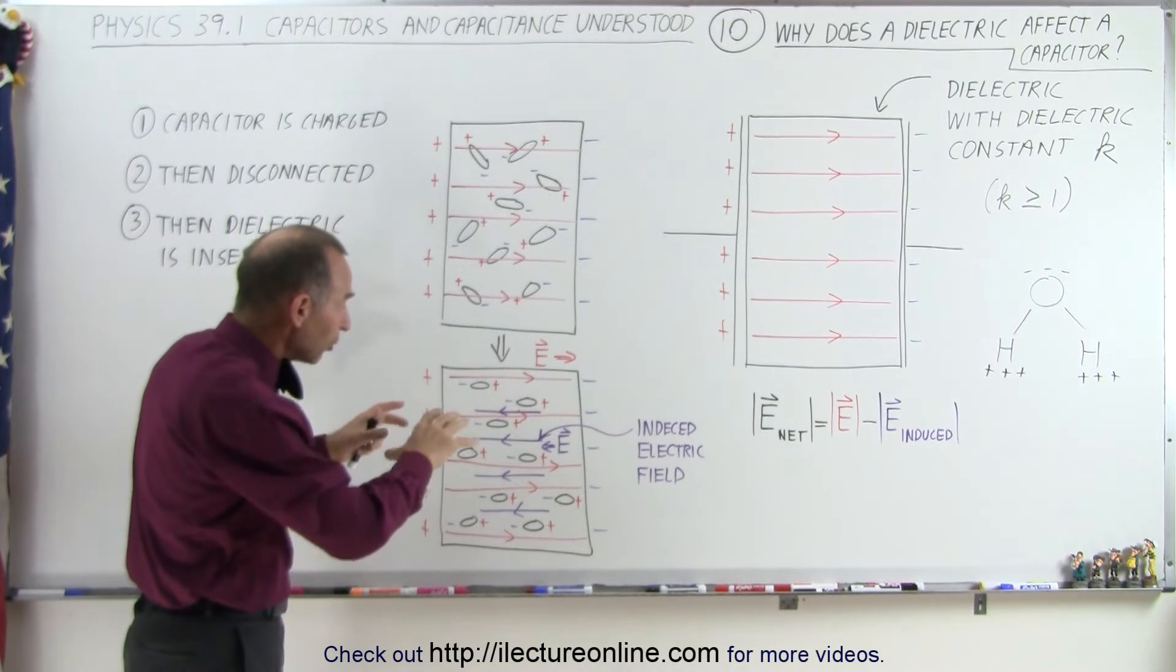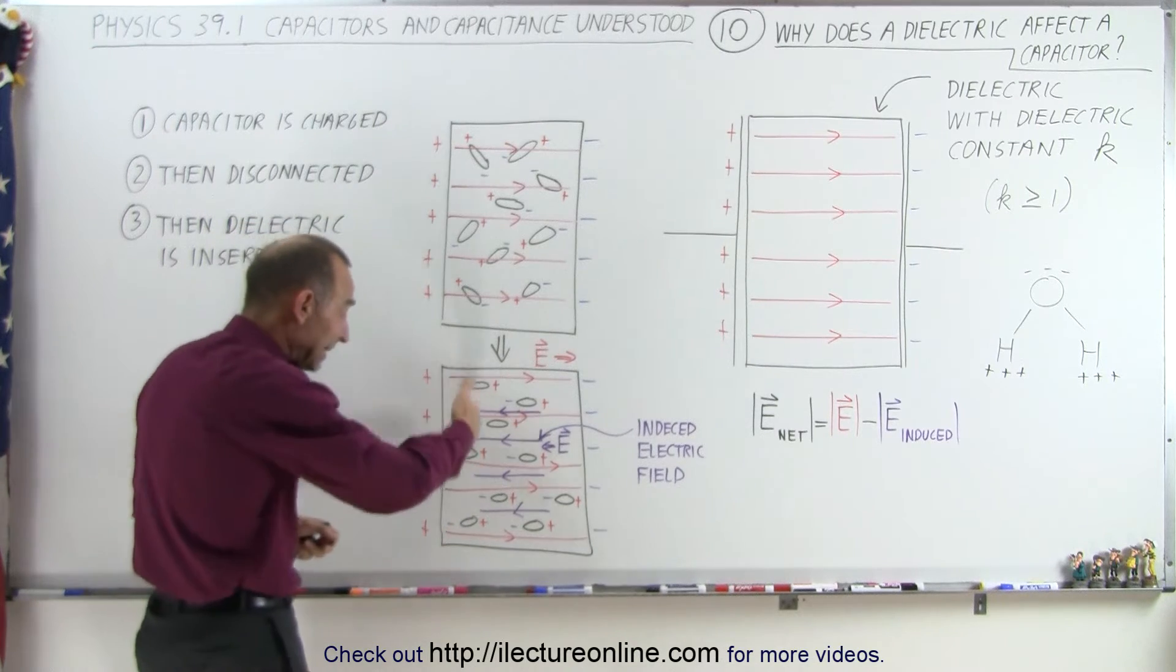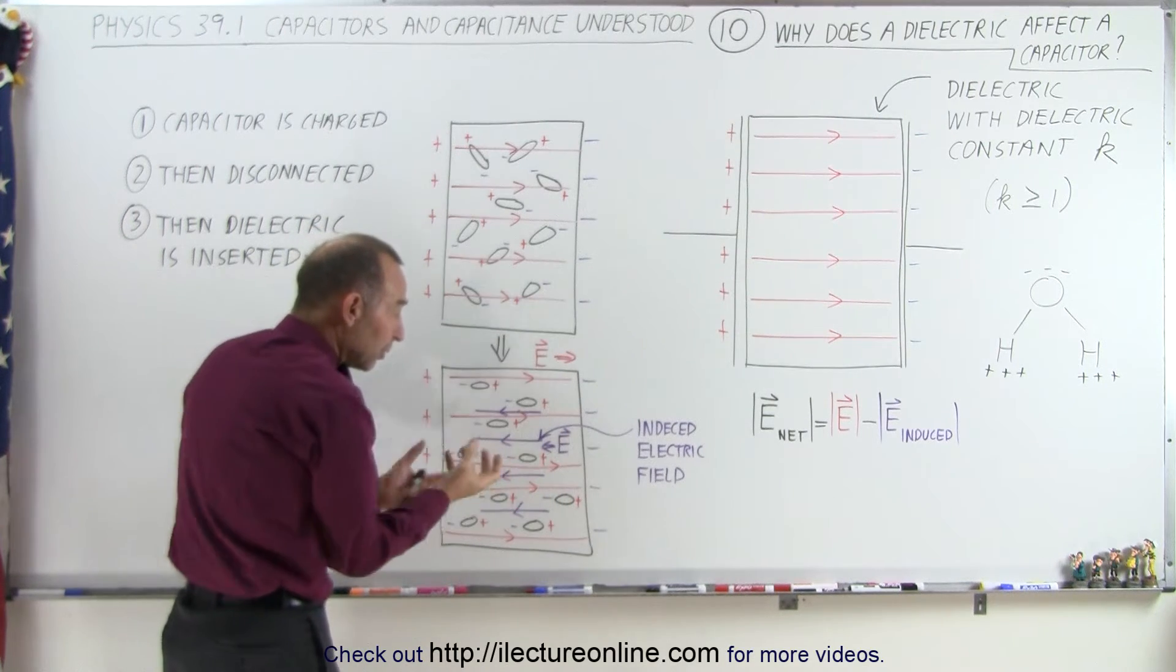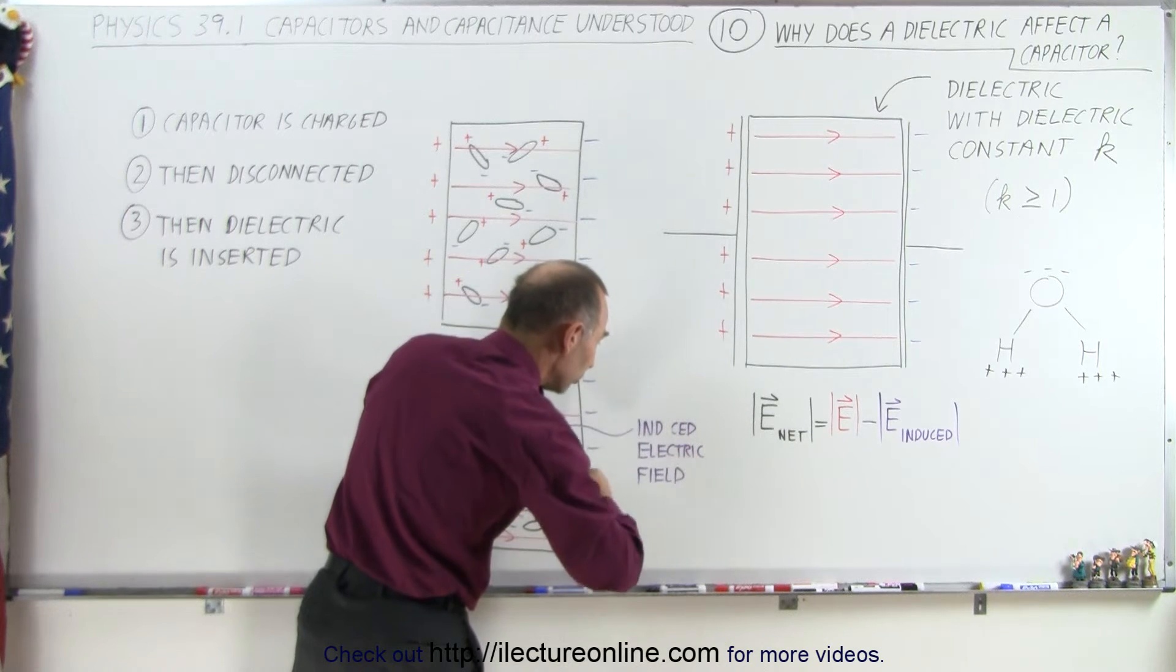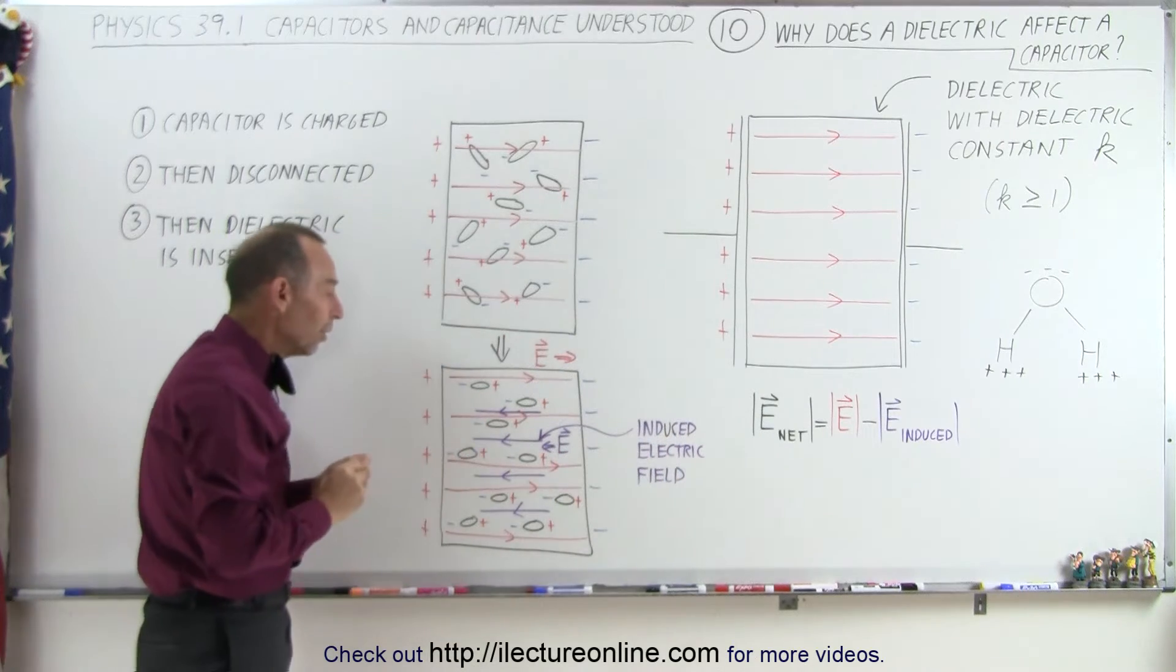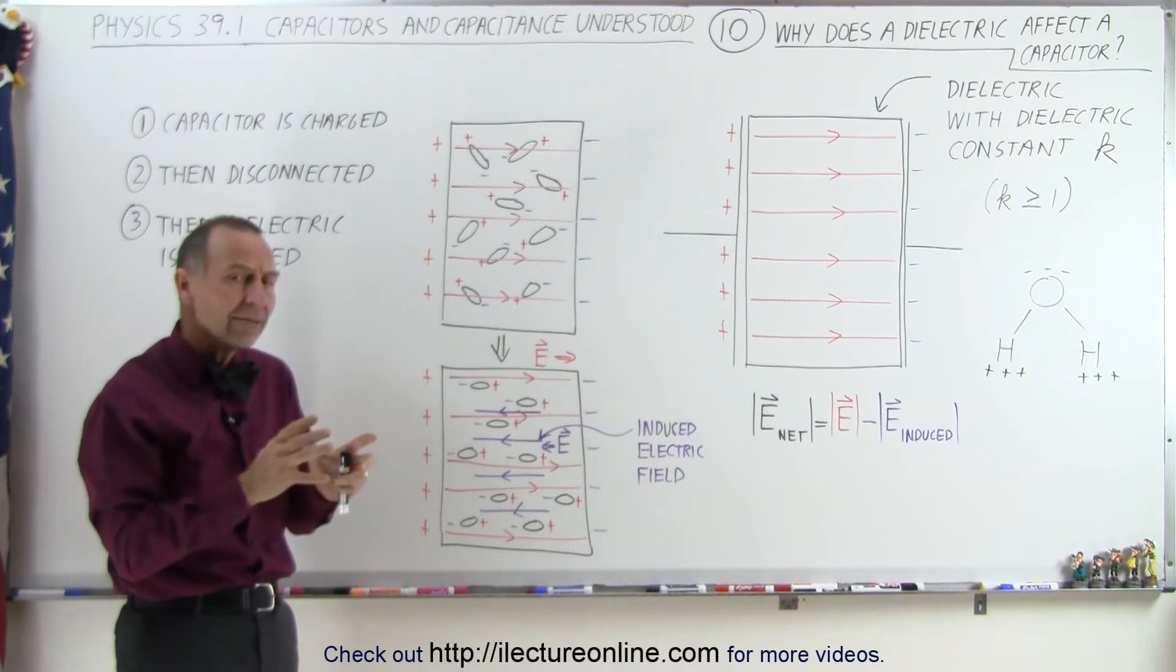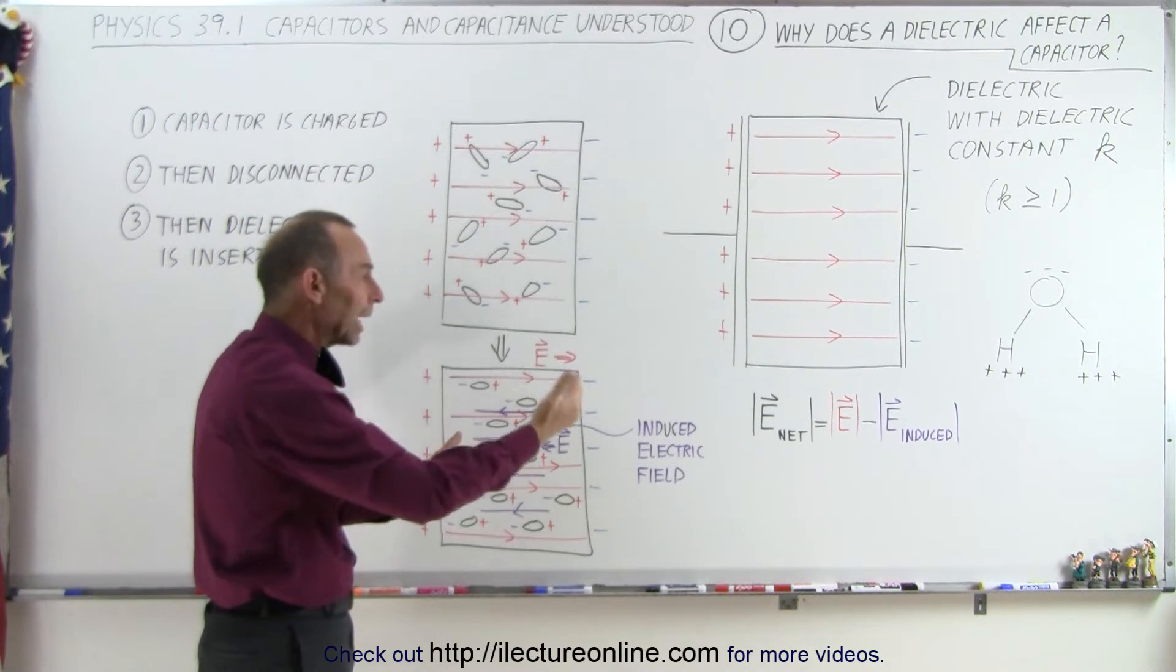So, once the molecules realign themselves, they themselves then produce an electric field, because we have a net result of negative charge on one side and positive charge on the other side. So that rearrangement of those molecules then produces what we call an induced electric field, which is in the opposite direction of the initial electric field that was there in the first place.